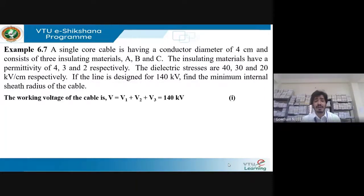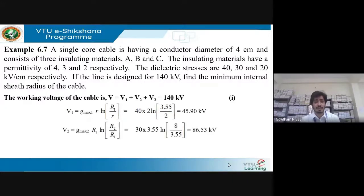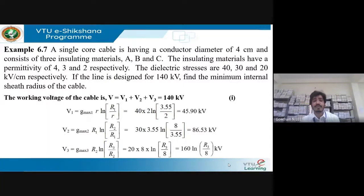The working voltage of the cable is given as 140 kV, so V = V1 + V2 + V3. V1 = Gmax1 × r × ln(R1/r). After substituting Gmax1 and r, V1 = 45.90 kV. V2 = Gmax2 × R1 × ln(R2/R1). Substituting Gmax2 and R1, V2 = 86.53 kV.